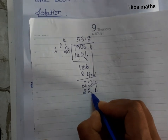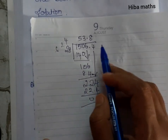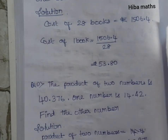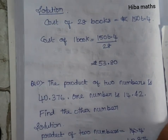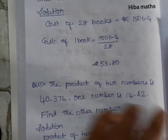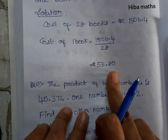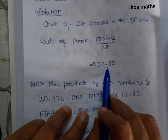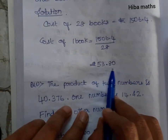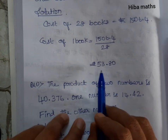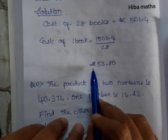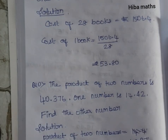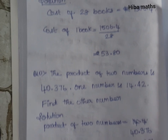Answer correct. So the result is 53.8. Cost of one book is rupees 53.80.